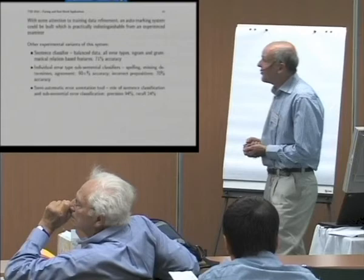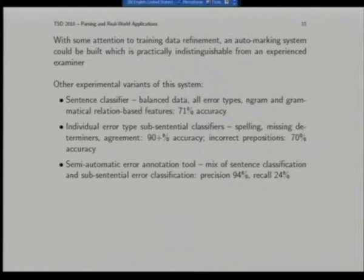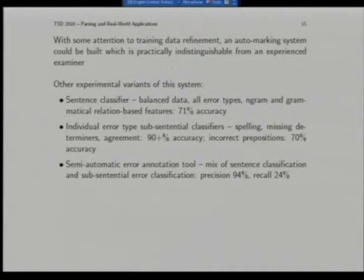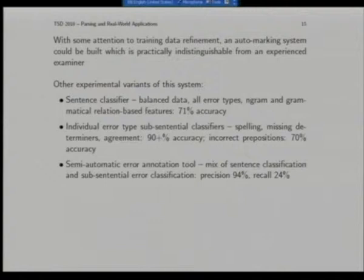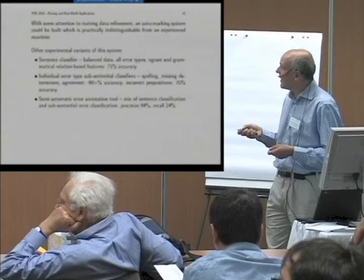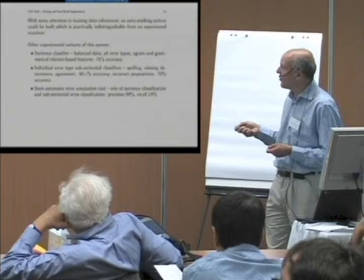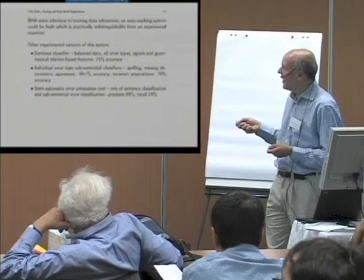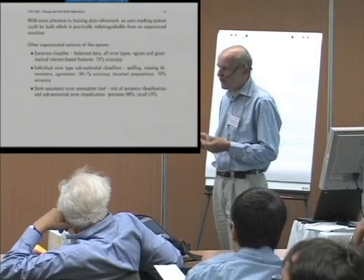This system is actually in use and saving Cambridge Assessment a lot of money — and making our company a fair bit of money in return. There are other things we could do: high-precision but low-recall classification of errors, perhaps to support an annotator, or to use this as a formative teaching tool rather than just a summative marking one. We can classify errors due to spelling, missing determiners, or subject-verb agreement with more than 90% accuracy.